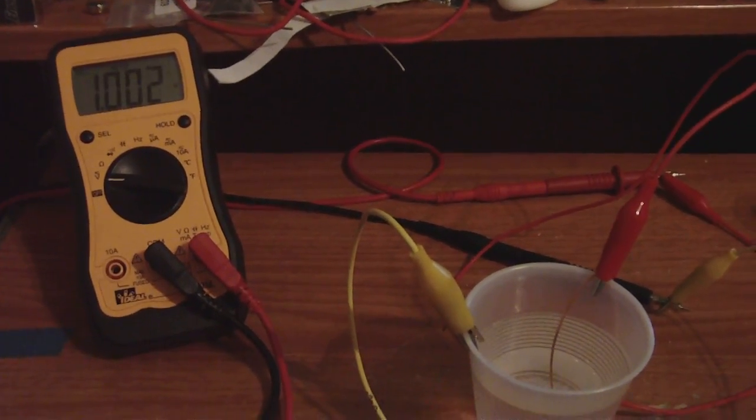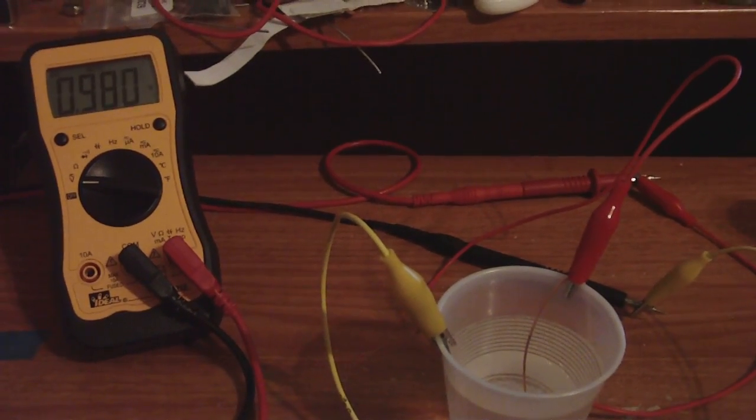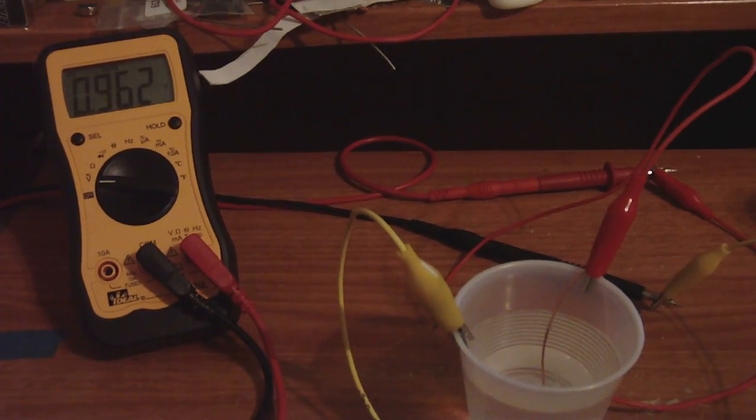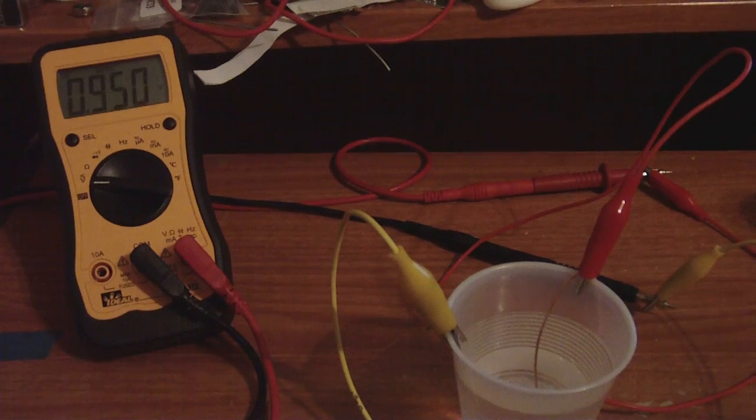Well, it tells us that these salts are not helping the galvanic process at all. So this is anti-table salt, because if you add table salt to it, it would have increased the power.